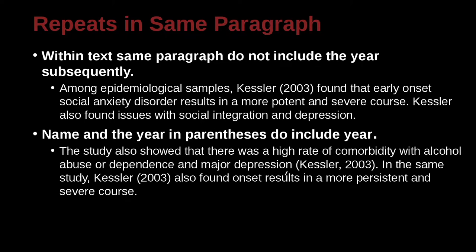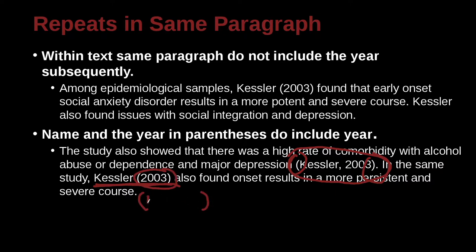If the repeat is in the same paragraph, but the first occurrence was inside the parentheses, then you do need to include the date. Let's look at that carefully — it's hard to understand. Here we have the first time we use the Kessler citation: 'The study also showed that there was a high rate of comorbidity with alcohol abuse or dependence and major depression (Kessler, 2003).' In the same study — here I'm going to cite Kessler again, the same paper — but because the first time the name appeared inside the parentheses, when I now use the name outside, I must include the date. Even if I included the name inside the parentheses, I would still need the date of 2003 because the first occurrence was inside the parentheses.